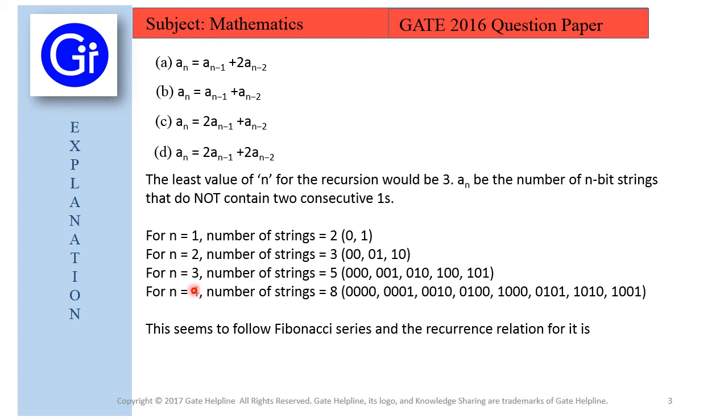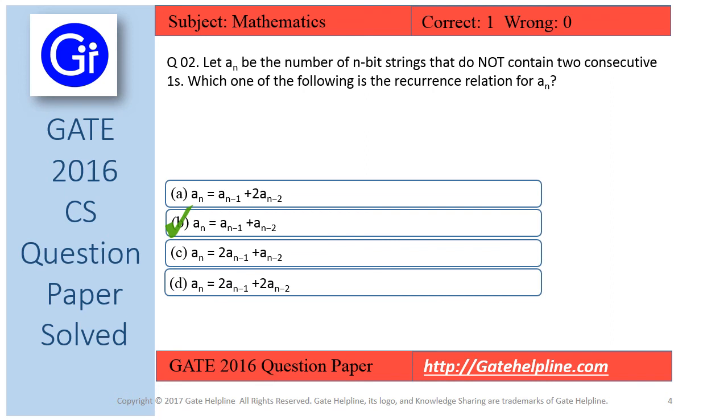For n=3, it must be a_2 + a_1 = 3 + 2 = 5. For n=4, it must be a_3 + a_2 = 5 + 3 = 8. This seems to follow the Fibonacci series, and the recurrence relation for it would be a_n = a_{n-1} + a_{n-2}. So the answer to this question is option B.